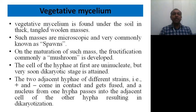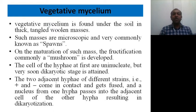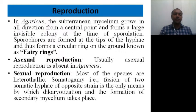When it comes to the dikaryotic stage, there will be two nuclei. The two adjacent hyphae — the positive and negative strains — come in close contact and get fused. As they fuse, the nucleus from one of the hyphae gets passed to the adjacent cell of the other hyphae, resulting in the formation of dikaryotes. This process is known as dikaryotization.